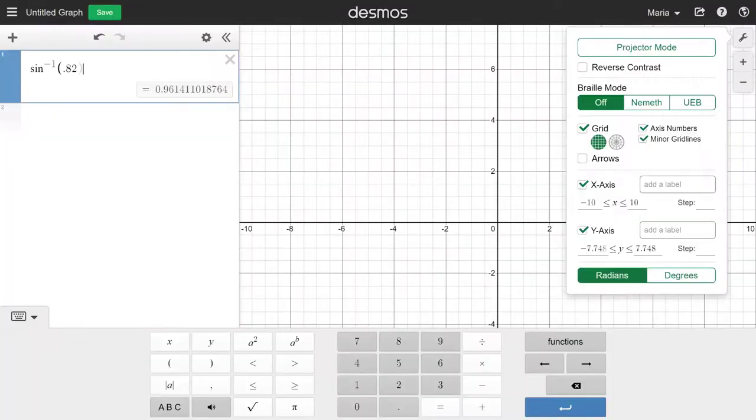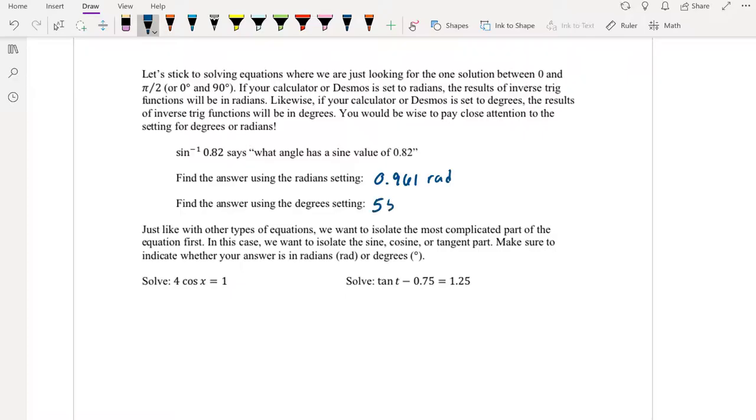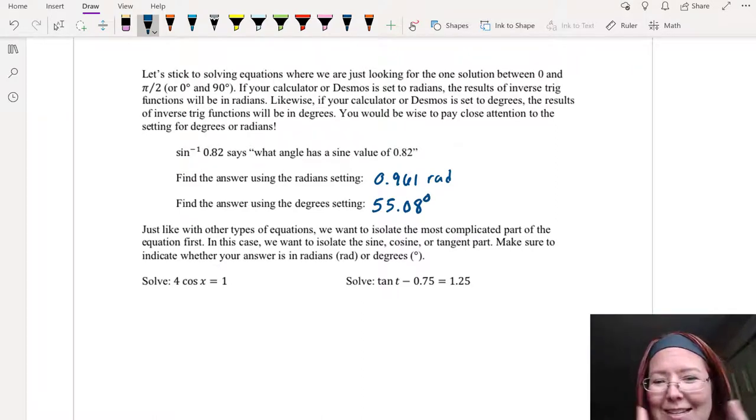Now let's go into the wrench menu and switch that to degrees, and once we switch to degrees we get fifty five point zero eight.